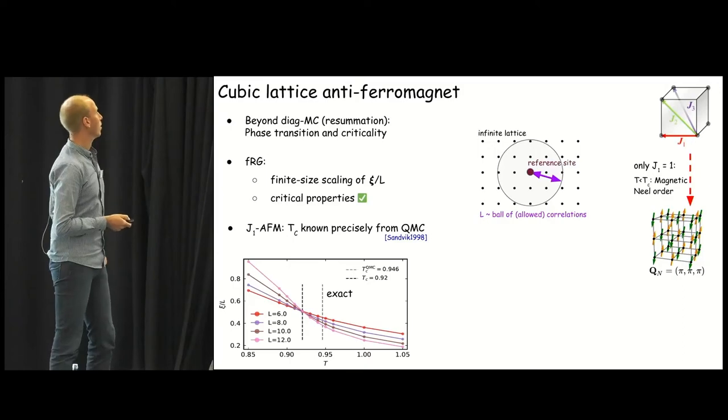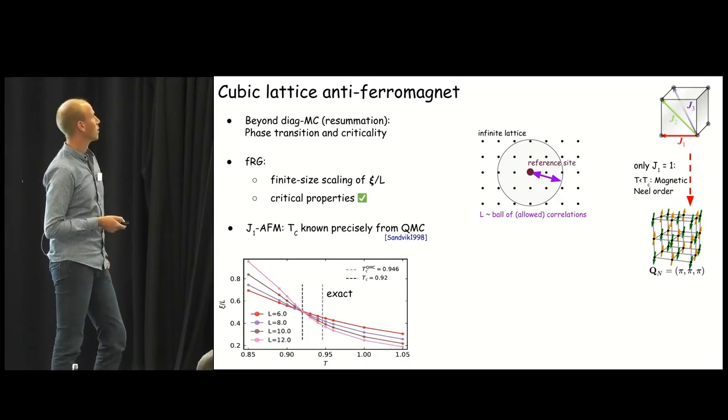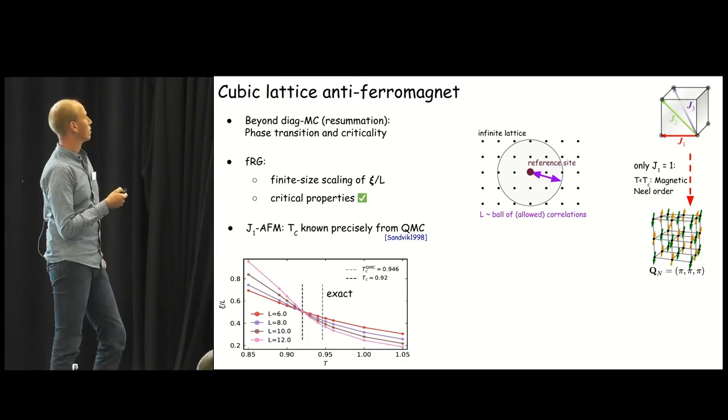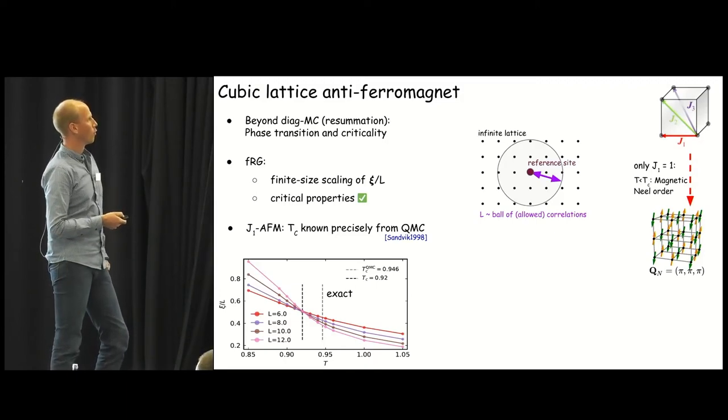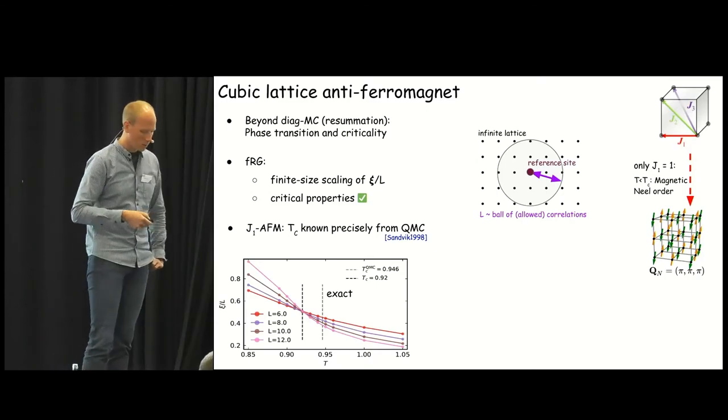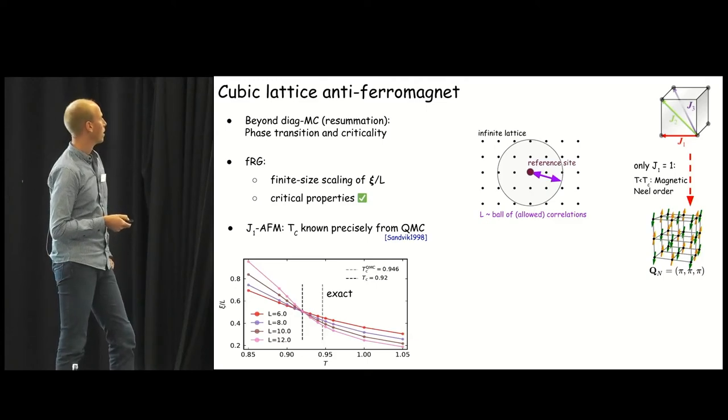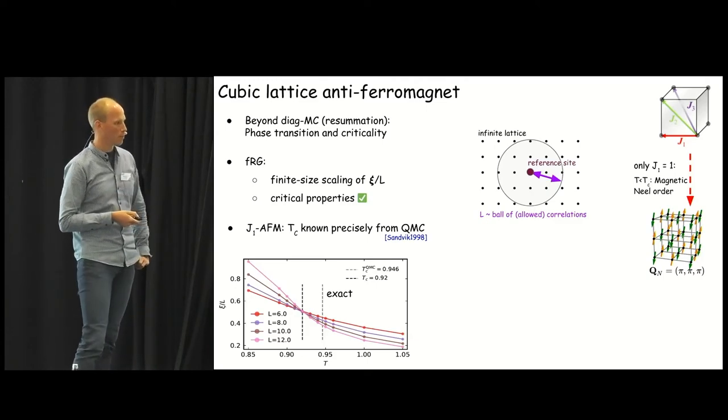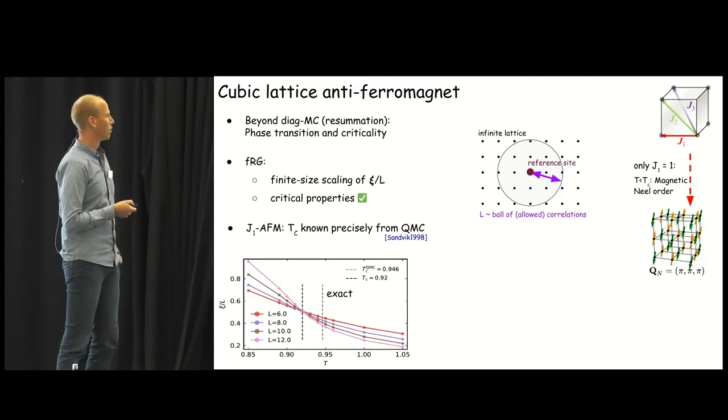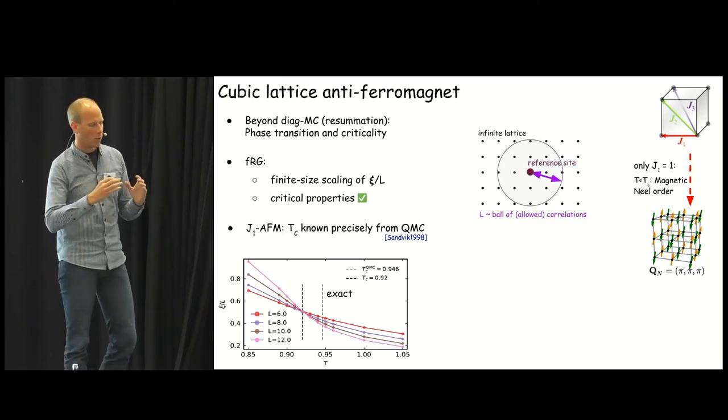Can we do something that the diagrammatic Monte Carlo people cannot do? And this is now the question about phase transitions. And for a benchmark system for magnetic phase transitions, let us look at the cubic lattice antiferromagnet, as is shown here, for now just with nearest neighbor coupling, only J1 antiferromagnetic coupling. And then it's known it's a three-dimensional system with a continuous spin rotation symmetry that below a finite critical temperature, we should expect to see magnetic Néel order, as it's shown here. And the way to assess this critical temperature is usually finite size scaling. And we can do this in our Majorana FRG as well, except that we do not really simulate systems that are finite. We simulate infinite systems, translational invariant systems, and this is also one of the strengths of the method, saving us a lot of numerical work.